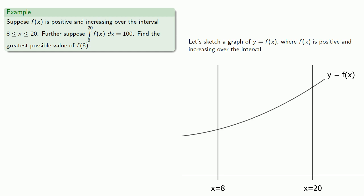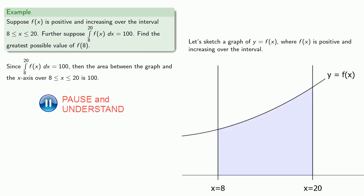So let's think about that. We have the value of the definite integral, and since the value of the definite integral is equal to 100, then the area between the graph and the x-axis over the interval is 100.